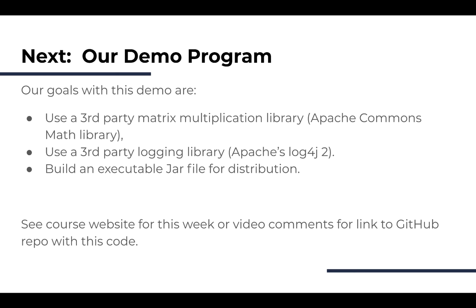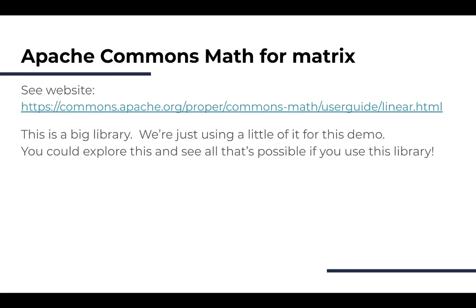The course website will have a link to a GitHub repo with this code, so you don't have to worry about typing everything. I went looking for a Java matrix library, found Apache Commons Math, and decided to use it. It's a really big library — you can do all kinds of linear algebra, eigenvalues, eigenvectors, and other fancy math. We're just going to declare some matrices and multiply them.